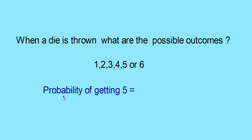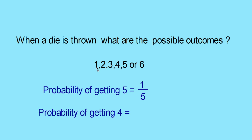Now what is the probability of getting 5 when throwing a die? Here you have 1, 2, 3, 4, 5, 6 — equally likely outcomes. Out of this, only one outcome is 5. So the probability of getting 5 is 1 out of 6, which is 1 by 6. Now probability of getting 4: there is only one 4 among 6 outcomes. So probability of getting 4 is also 1 by 6.